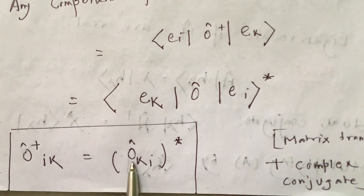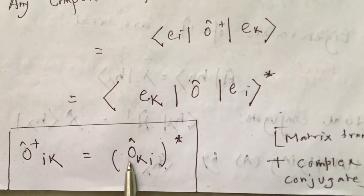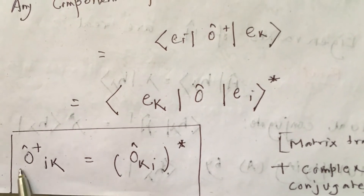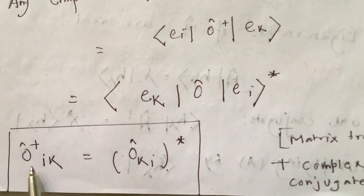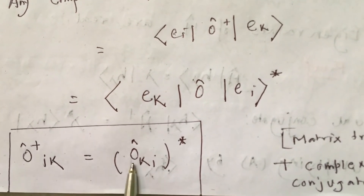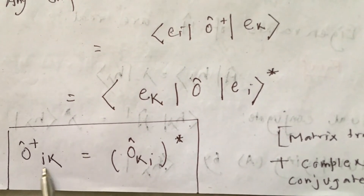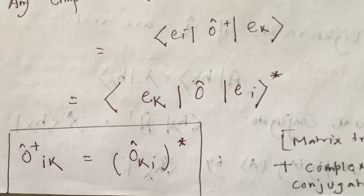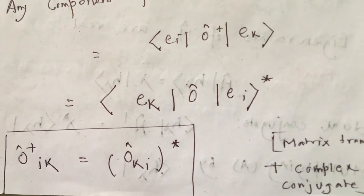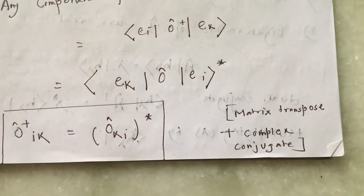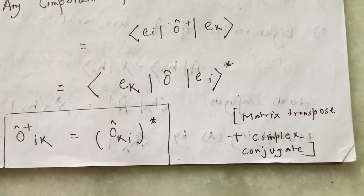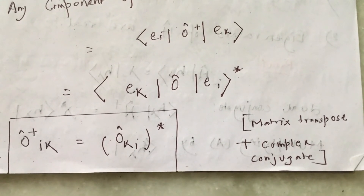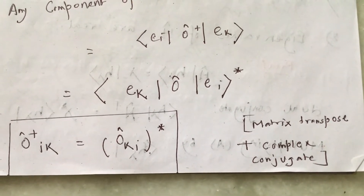So if I know the O matrix and I know the KI-th element of this O matrix, I make a complex conjugation of it and switch the row and column indices. What I get is the O dagger operator, which is the Hermitian conjugate of O, with indices already interchanged. To construct O dagger from O: take the complex conjugate of each element and then perform a matrix transpose — transpose means rows become columns and columns become rows.